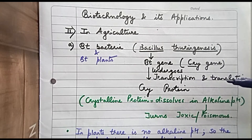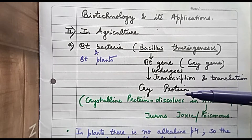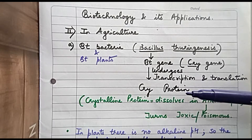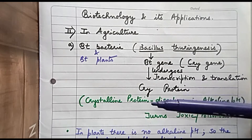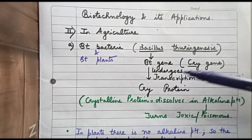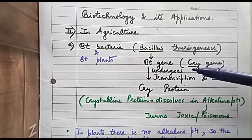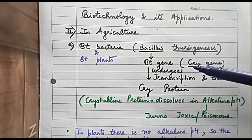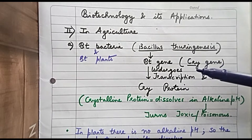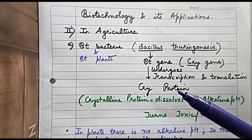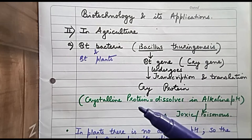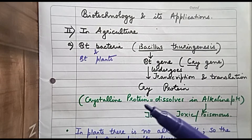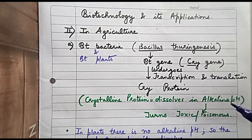After transcription and translation, this will produce a protein known as cry protein. Keep in mind: if we are talking about the protein, don't underline the word cry — underlining or italics denotes the gene. Now, cry protein is a crystalline protein, and it dissolves in alkaline pH.